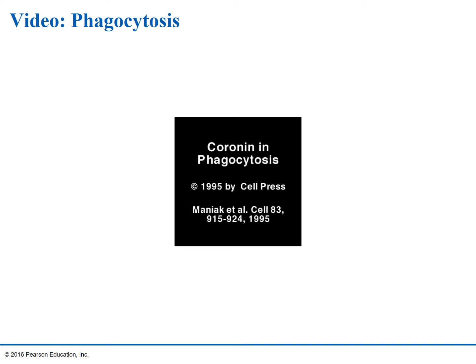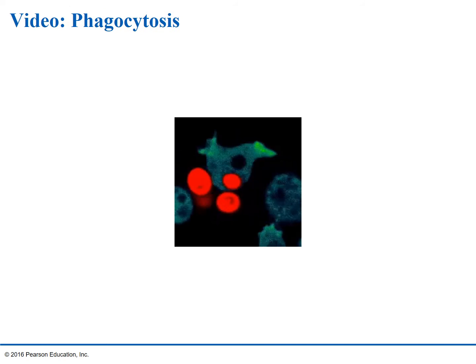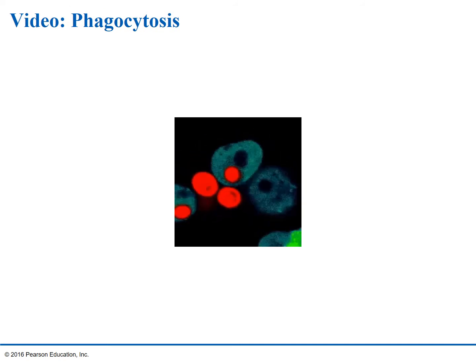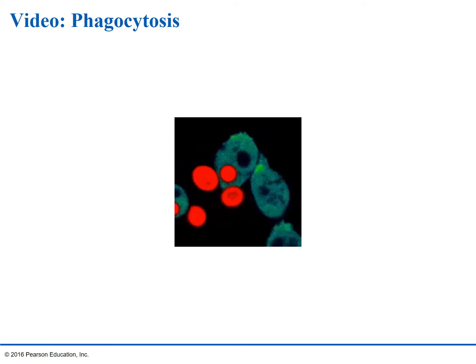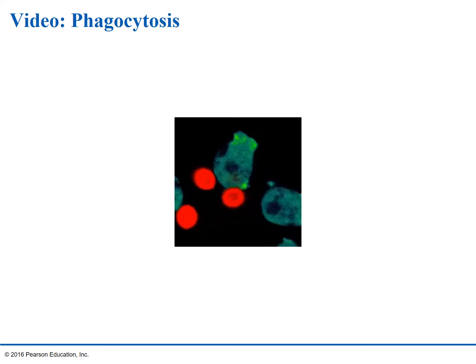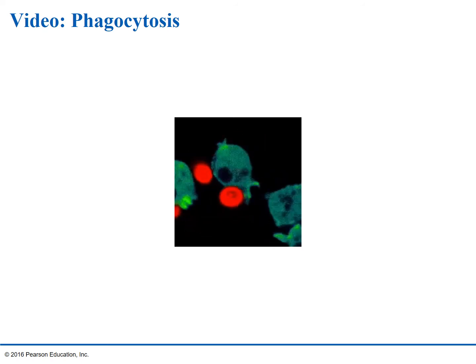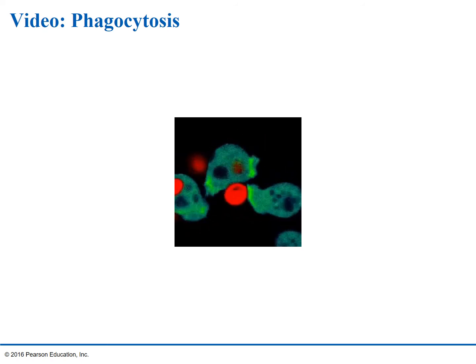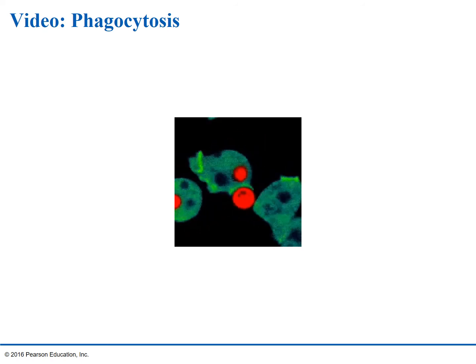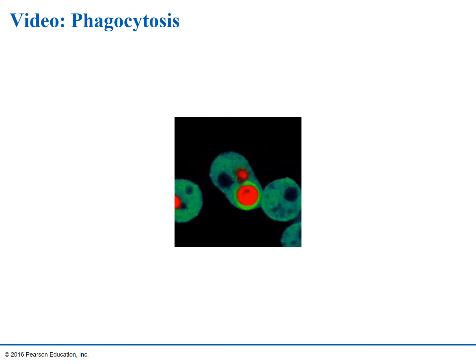There are no words for this video — it's just showing you phagocytosis in action. The cells are those fluorescent green stains, and then whatever they're engulfing is in the red.